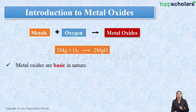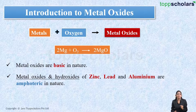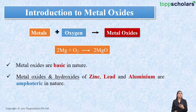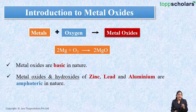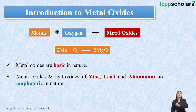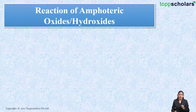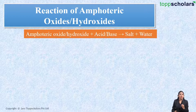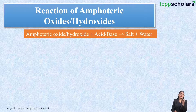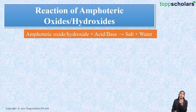However, there are some metal oxides and hydroxides — for example, those of zinc, lead, and aluminium — which are said to be amphoteric in nature. Amphoteric means that these metal oxides and hydroxides have acidic character as well as basic character. Amphoteric oxides or hydroxides are the ones which have both acidic and basic characters.